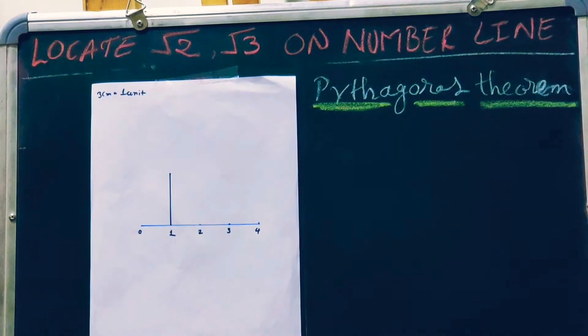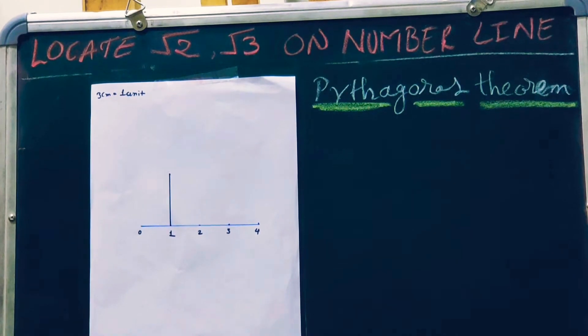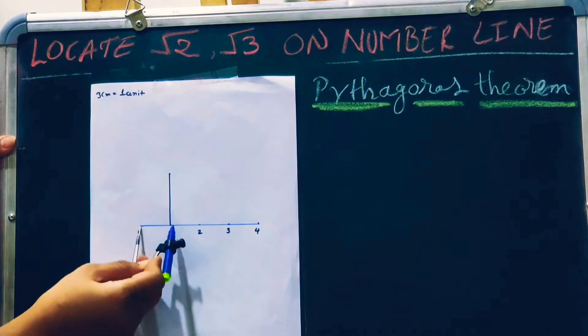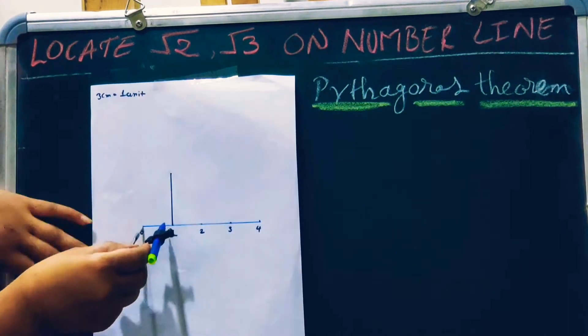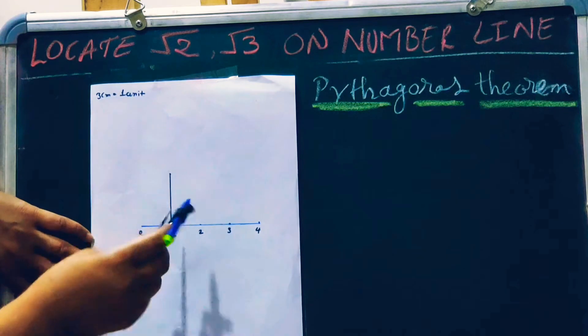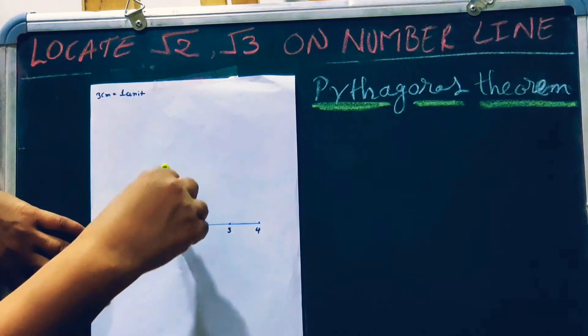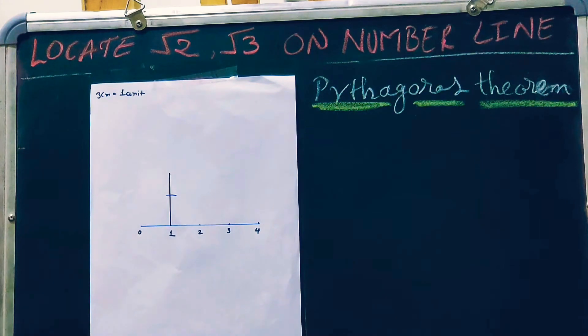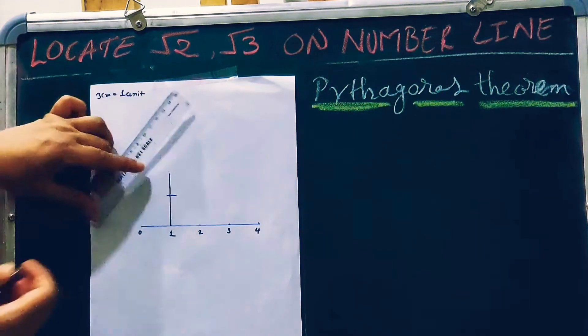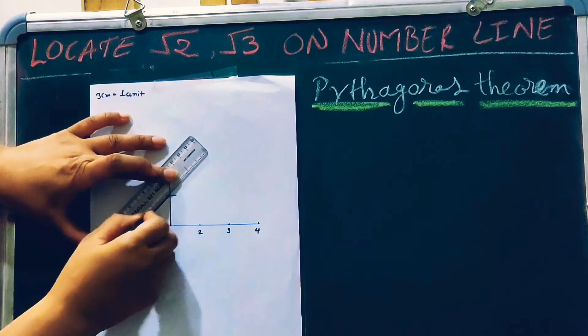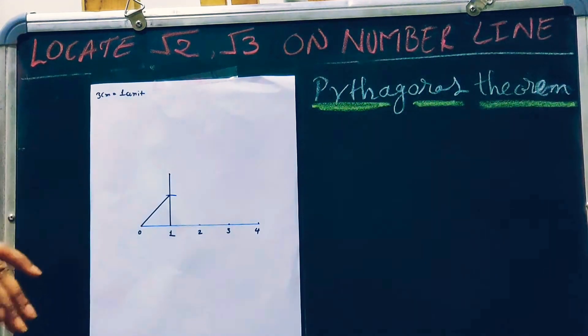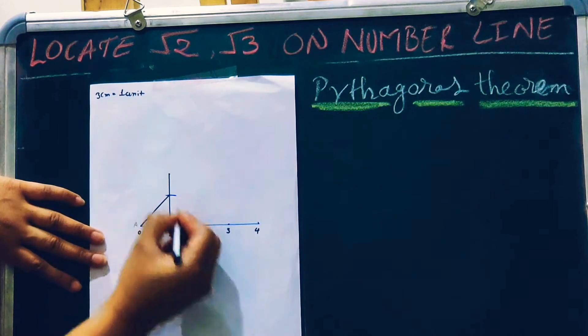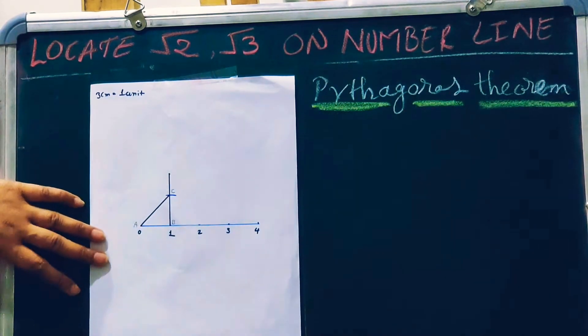On the number line, now you have to measure 1 from here and make a cut on this line of the same length, 1 unit. Now, from the starting point, we can mark this as A, this point is B, and this point here is C.